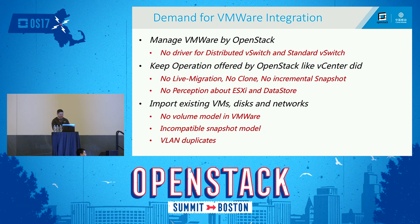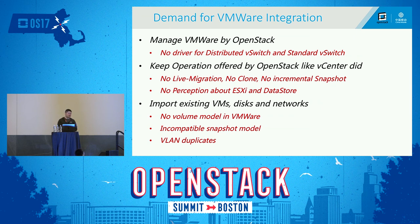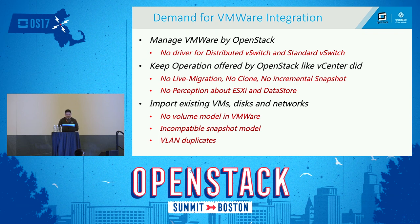The lack of ESXi and datastore visibility has consequences. For example, a user may have four virtual machines for a business application and want to separate them across different ESXi hosts and different datastores to achieve high availability. But since OpenStack does not know this information, scheduling is totally reliant on vCenter — which is not what the user wants.